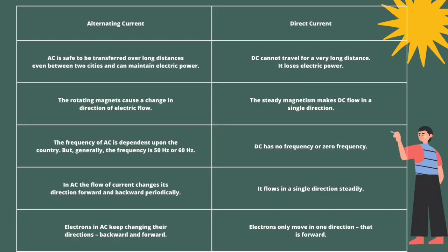Now we'll discuss the differences between alternating current and direct current, which is useful for exams and training. AC is very safe to be transferred over long distances, while DC cannot travel very long distances because it loses electric power. Rotating magnets cause a change in the direction of electric flow, resulting in differential directions for AC, while in DC a steady mechanism makes the current flow in a single direction.